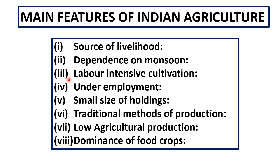Third, Indian agriculture is labor intensive — most of the cultivation work, that is agricultural work, is done with the help of manual labor. Next, there is underemployment in agriculture, meaning agriculture is done according to season. When cultivation is done they work, but afterward they remain unemployed, or more workers than needed work on the same piece of land.